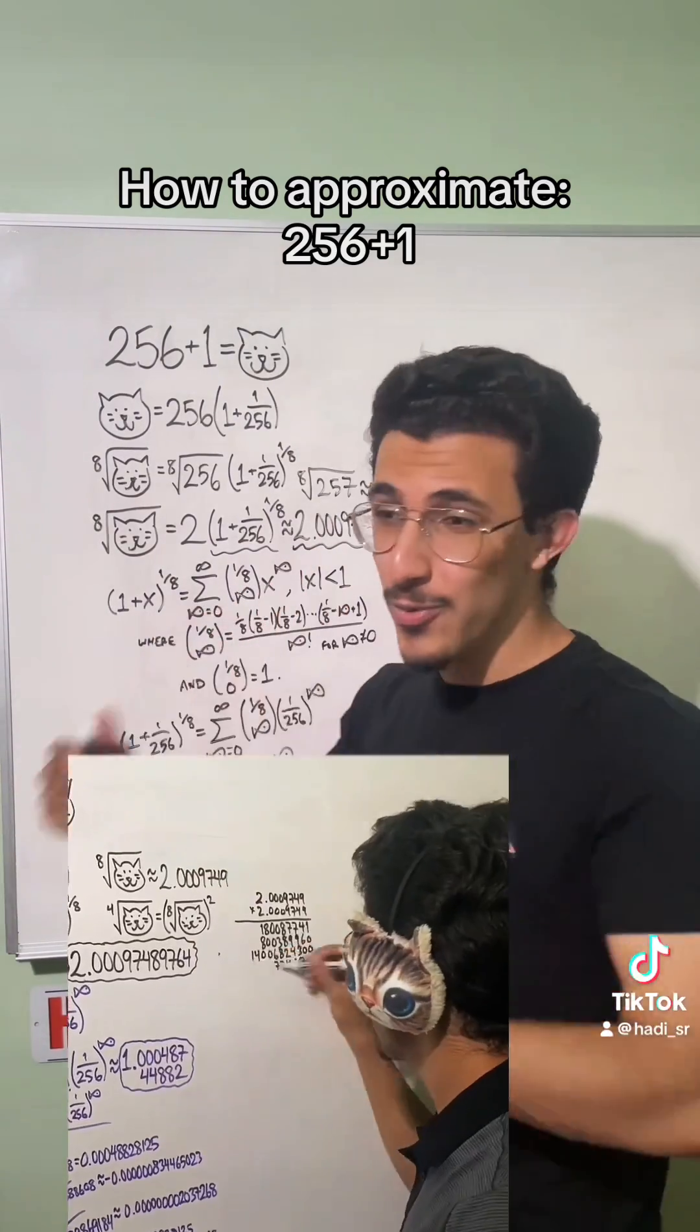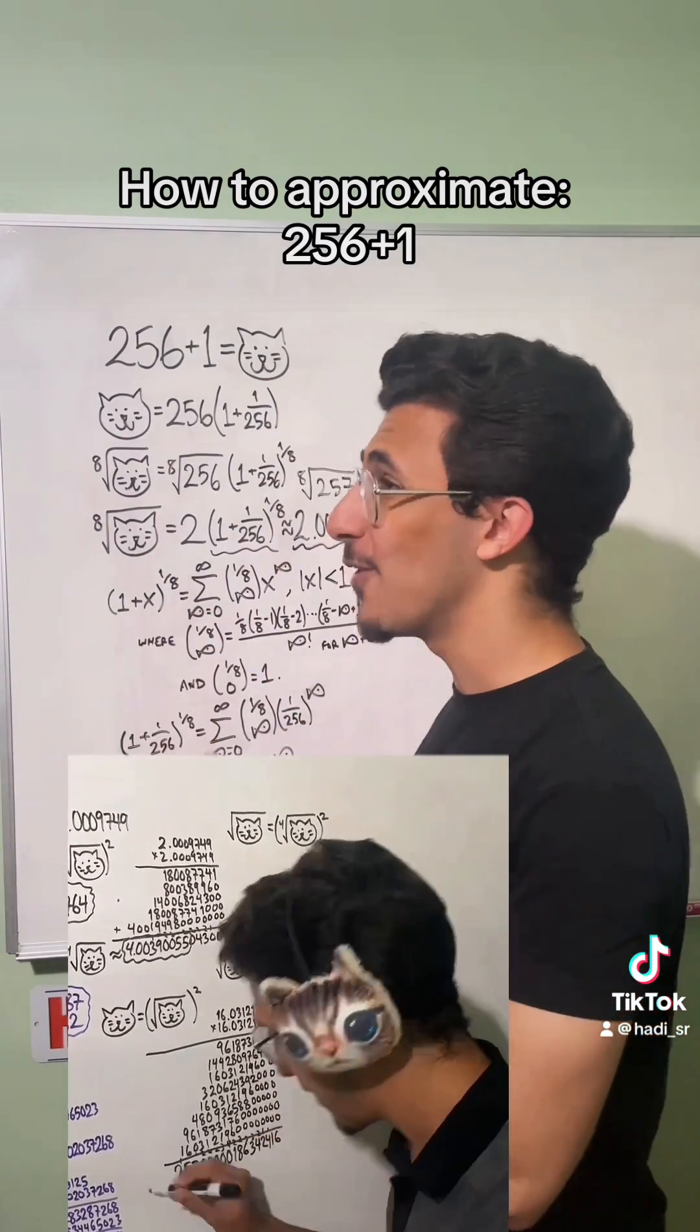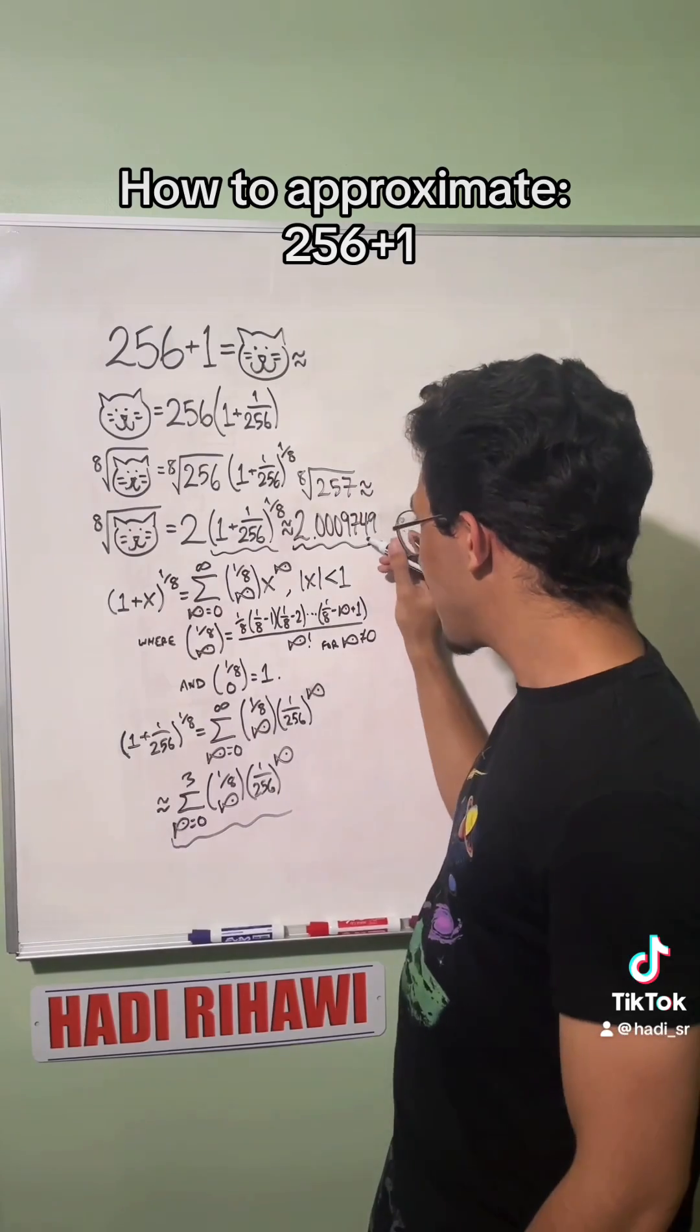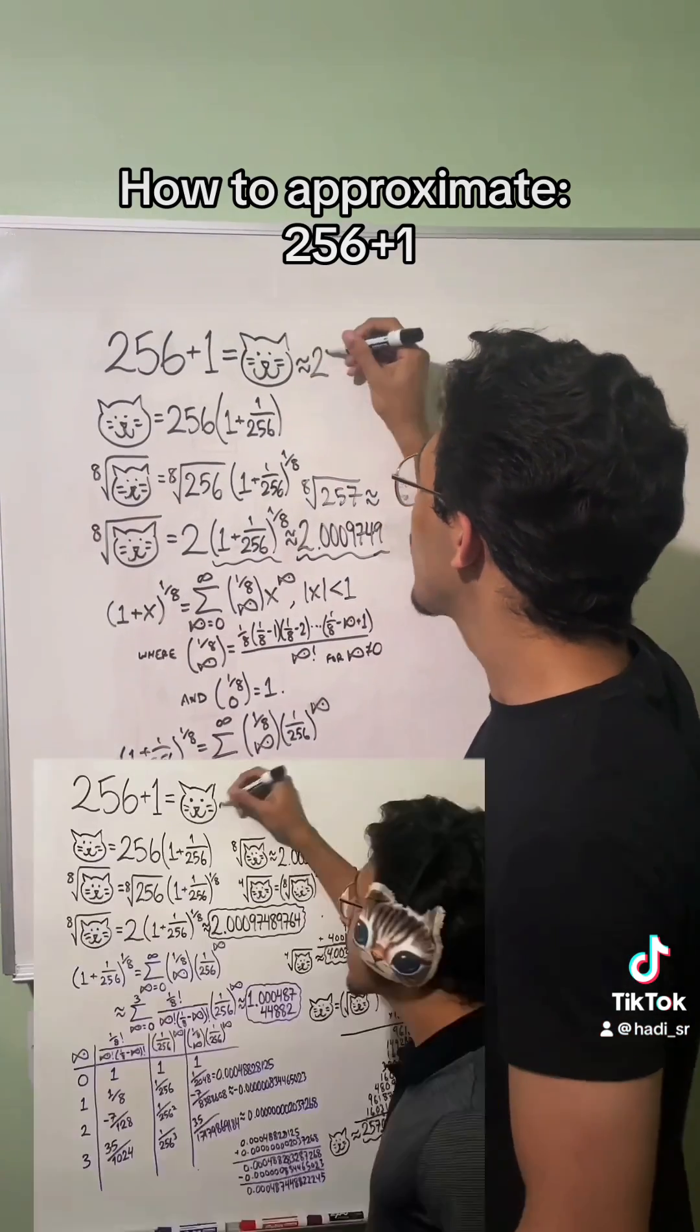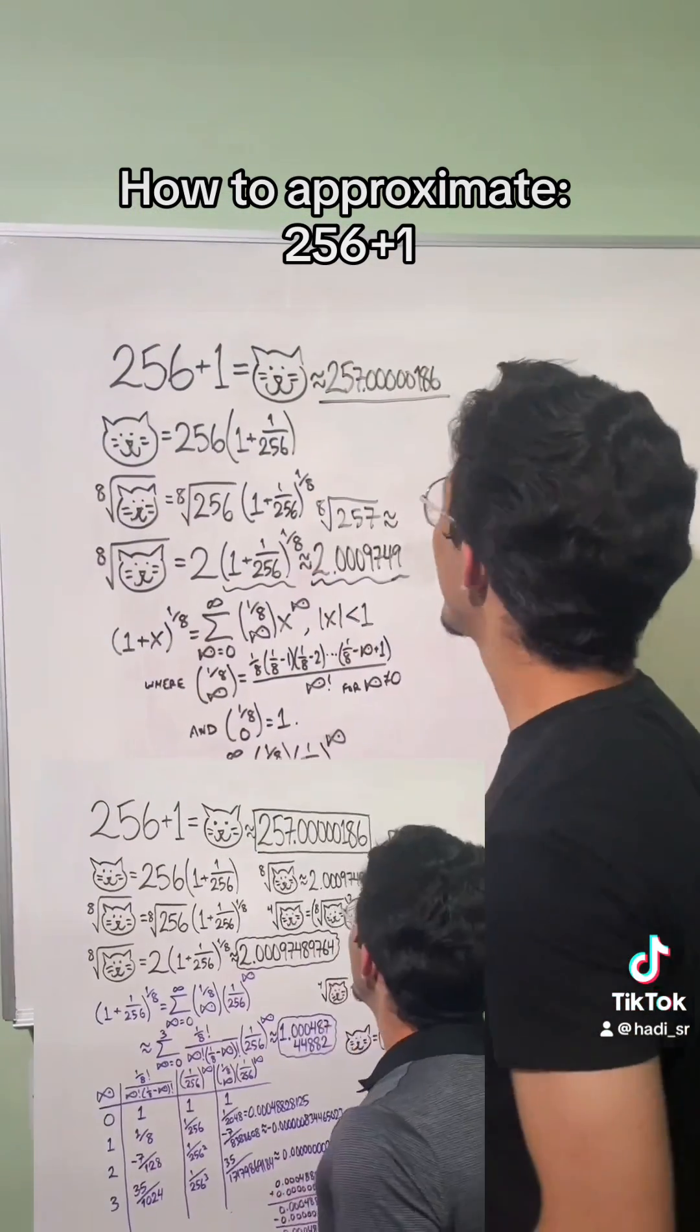So I take the eighth root, square it to get the fourth root, square it again to get the square root, and square it the last time to get the original value of 257. And due to the error in this rounding... Yeah, that's gonna do it.